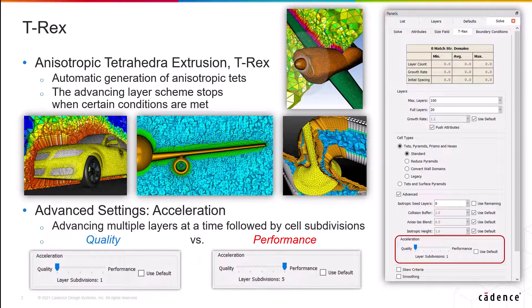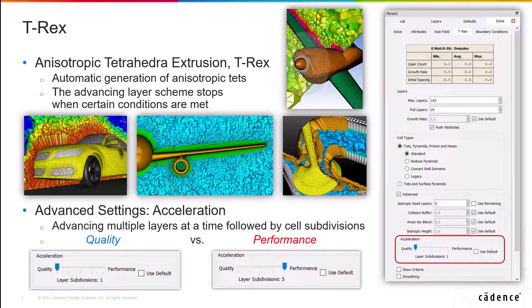On the left, we have the layer subdivision set to 1, which means that T-Rex will march one layer at a time like it normally does, and so it will perform all the computations and quality checks for every single layer, which means there would be no acceleration. Now this is the quality mode, which is actually the default setting.